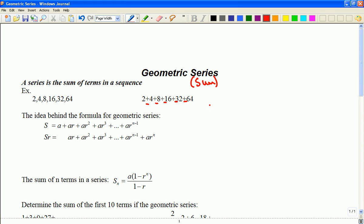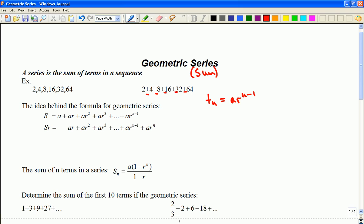Yesterday we talked about how a term formula looks like this and that's what I'm going to list off just to give you an idea how this formula works. So this would be the first term, second term, third term, fourth term, and so on up to n terms.